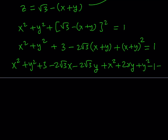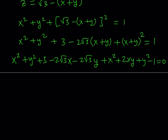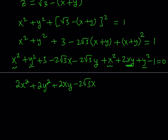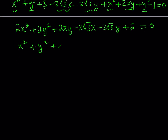Now we subtract 1 and set the whole thing equal to 0, then add like terms. We get 2x squared plus 2y squared plus 2xy minus 2 root 3 x minus 2 root 3 y plus 2 equals 0. Notice that everything can be divided by 2, giving us x squared plus y squared plus xy minus root 3 x minus root 3 y plus 1 equals 0.